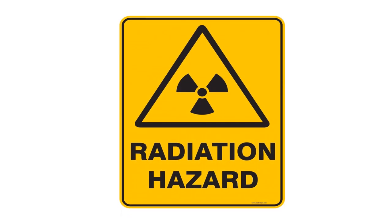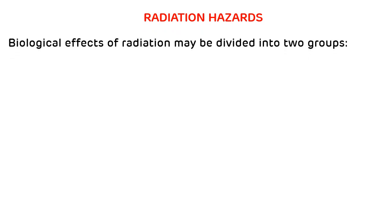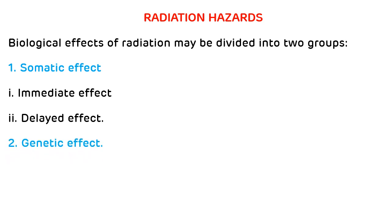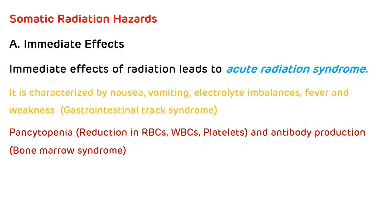Radiation hazards — biological effects may be divided into somatic and genetic effects. Somatic effects have immediate and delayed categories. The immediate effect leads to acute radiation syndrome, characterized by nausea, vomiting, electrolyte imbalances, fever and weakness — called gastrointestinal tract syndrome. It is also characterized by pancytopenia with reduction in RBCs, WBCs and platelets, and reduction in antibody production — called bone marrow syndrome.